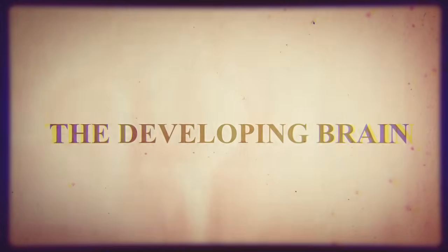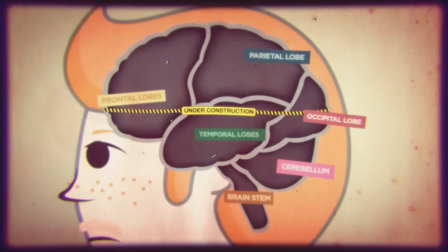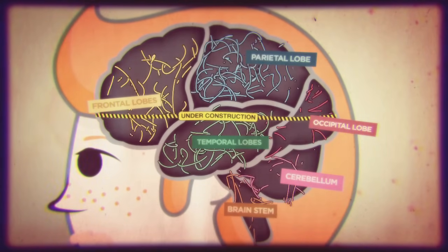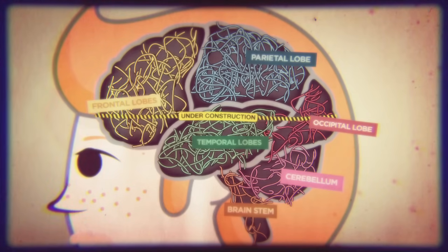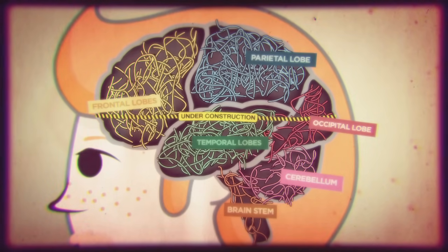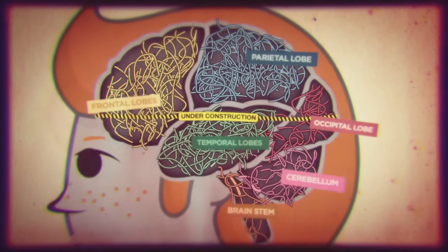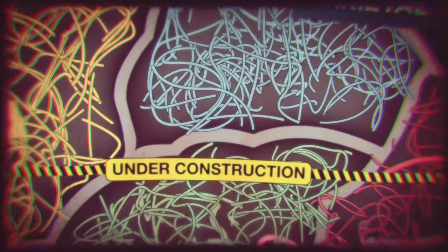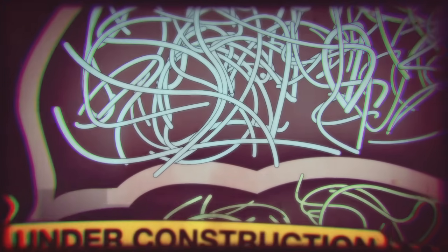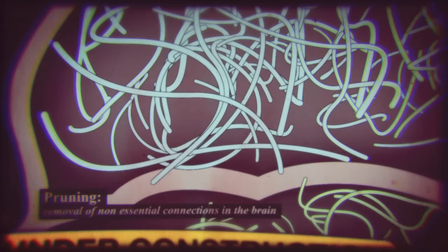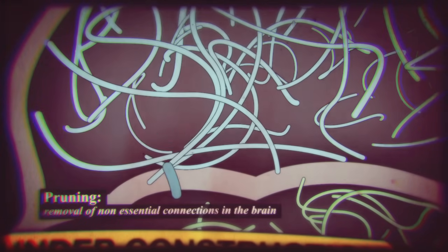The developing brain is a learning machine and from when we're born it grows enormously as we learn more and more about the world. This means we end up with billions of connections in our brains, but many of these pathways are either too slow or not needed. It's during the teenage years that our brains are renovated, whereby most of these unnecessary connections are removed or pruned away.